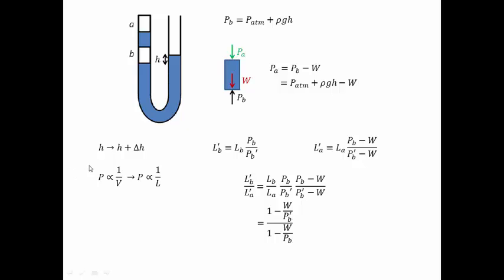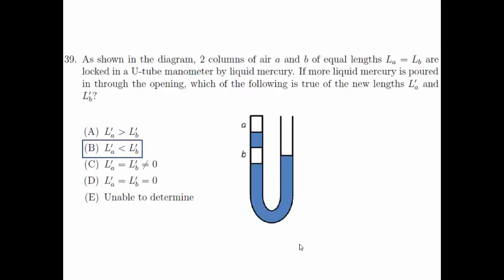Due to the increase in height difference at both sides of the U-tube manometer after the insertion of new liquid mercury, we know that the new pressure PB' is more than the old pressure PB. With this in mind, looking back at this ratio, we can conclude that this ratio is actually bigger than 1. Therefore L'B is more than L'A. So the answer to this question is B: L'A is less than L'B.